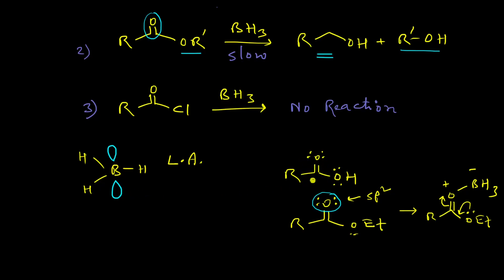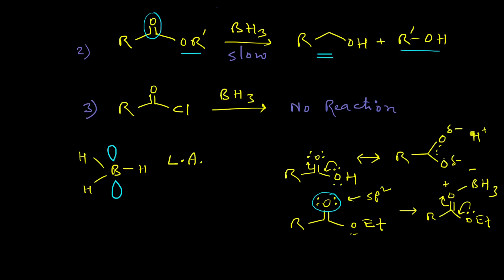In carboxylic acids, the two oxygen atom centers are essentially equivalent. This is because due to extreme conjugation they adopt a resonance hybrid where both oxygen atoms are equally negatively charged, and the hydrogen atom carries a unit positive charge and remains as a counter cation.